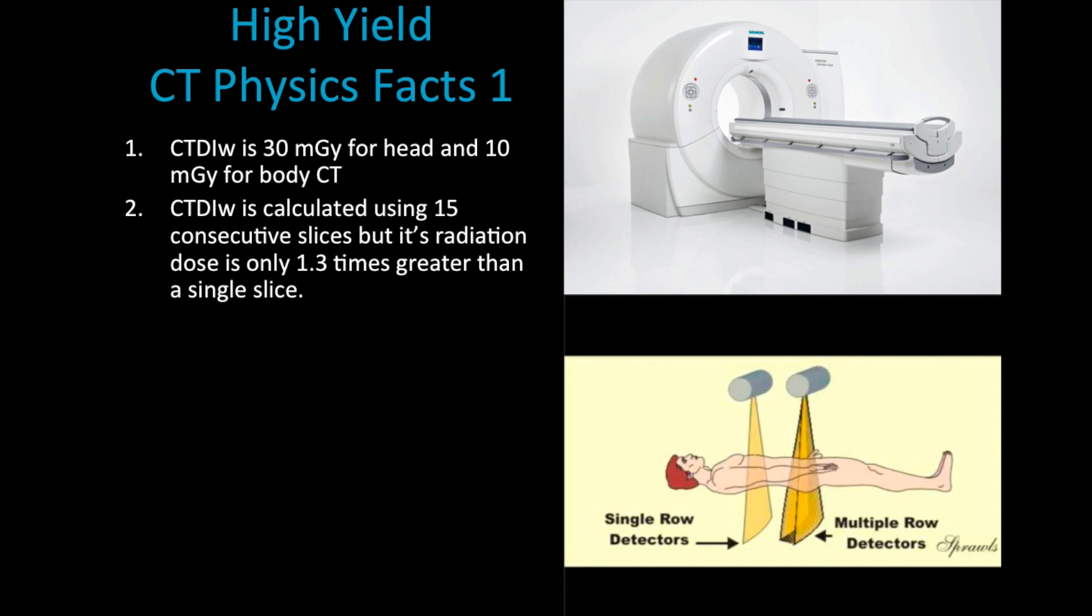The CT dose for a single slice does not take into account that extra radiation, therefore the CTDI tends to be a little bit higher. Don't be distracted by the calculation of 15 slices because that doesn't change the dose that we're calculating, which is based on concentration.